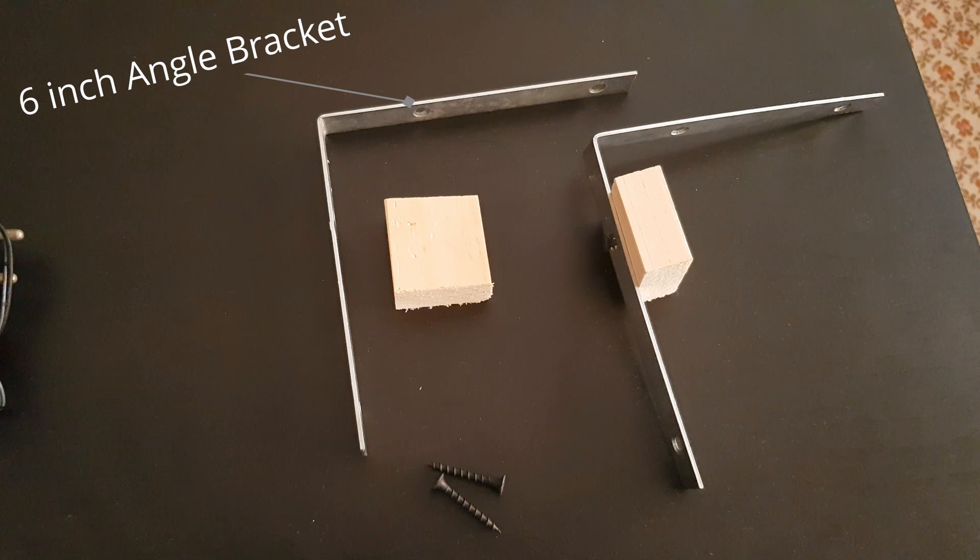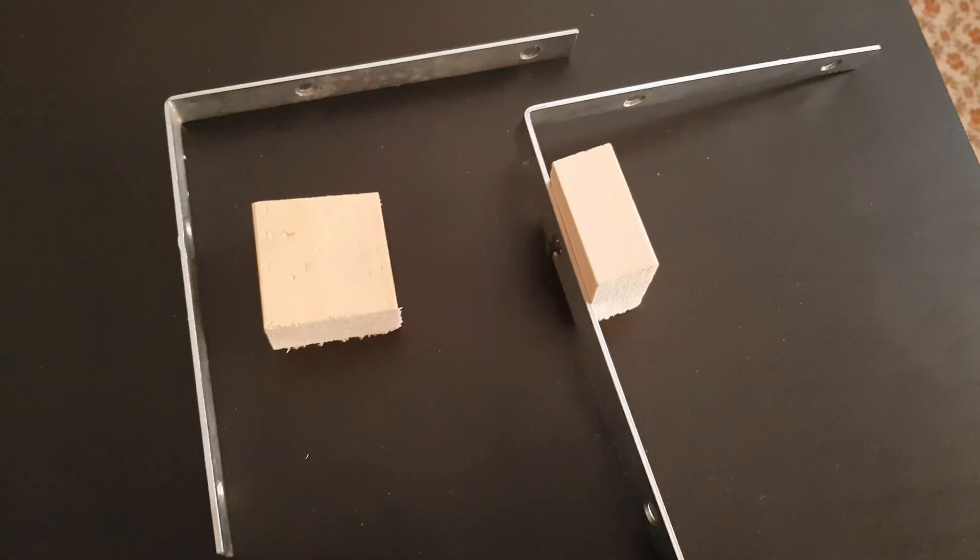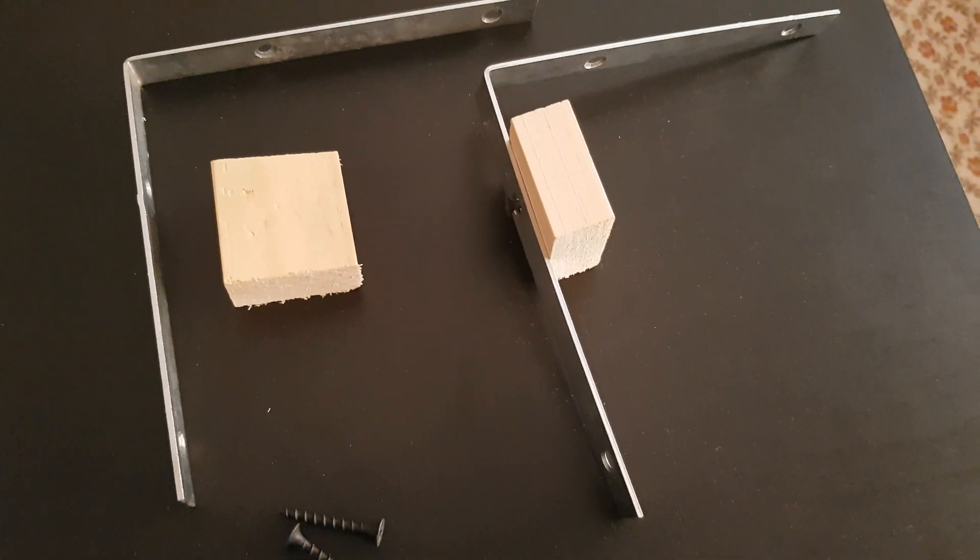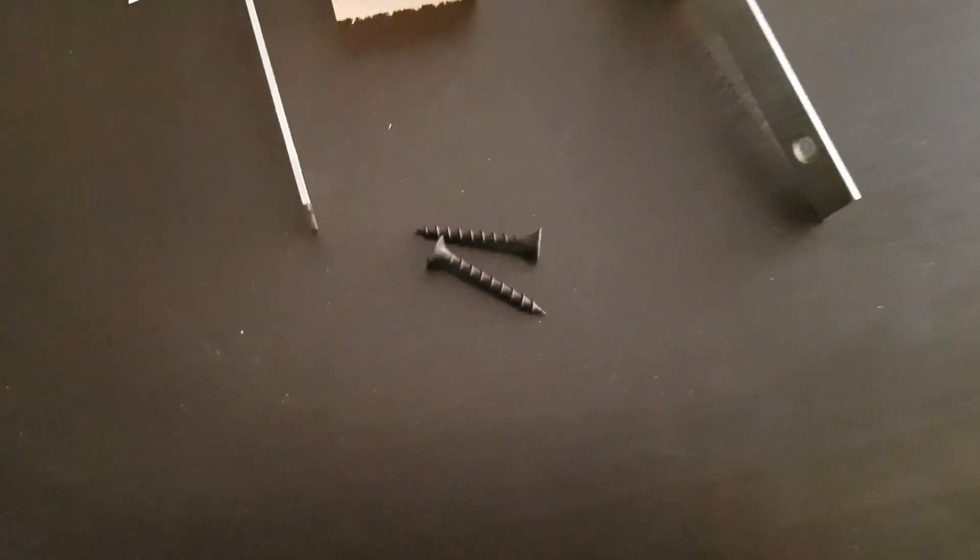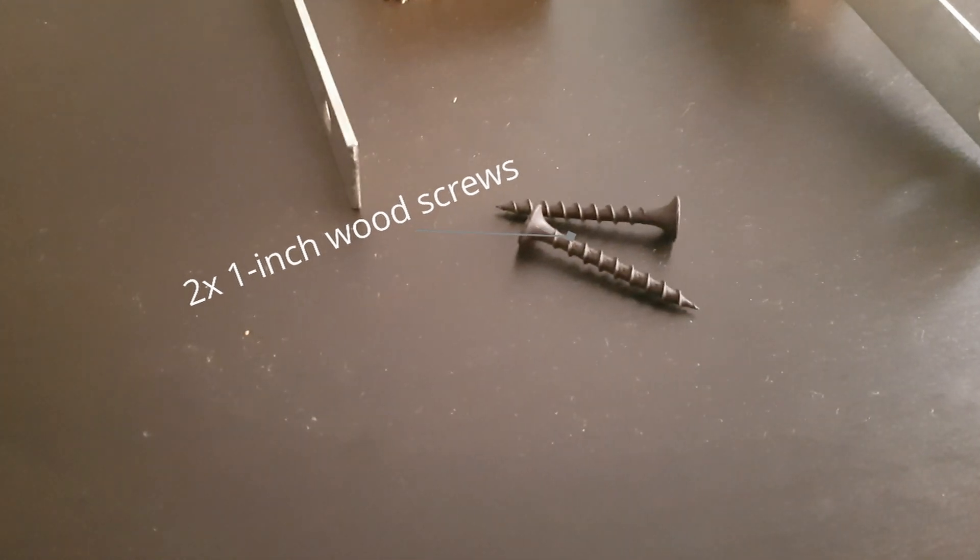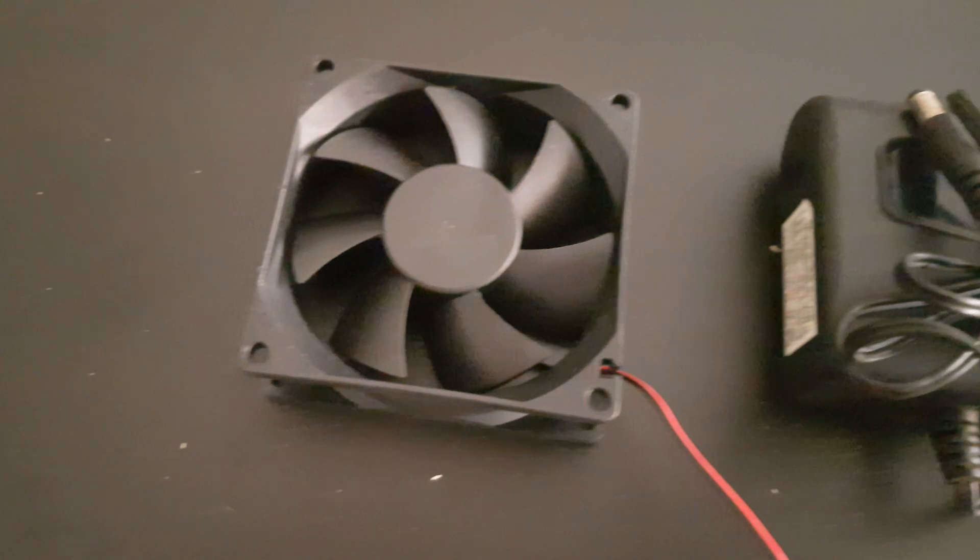Two angle brackets, size depending on your aquarium size and lid. Two small blocks of wood, three-quarter inch wood screws, a single 12 volt DC adapter, and a single 12 volt 120 millimeter DC fan—enough for a 10 gallon aquarium.